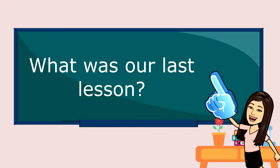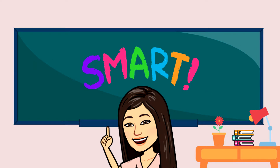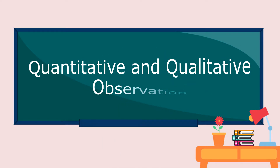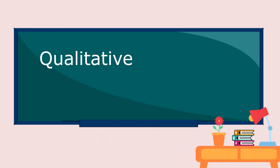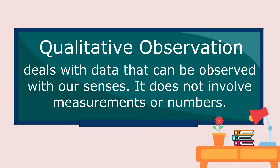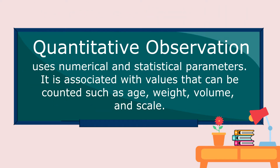Again, what was our last lesson? You are correct! Last time, we discussed about quantitative and qualitative observation. So again, what is the difference between qualitative and quantitative observation? Qualitative observation deals with data that can be observed with our senses. It does not involve measurements or numbers. Quantitative observation uses numerical and statistical parameters. It is associated with values that can be counted such as age, weight, volume, and scale.